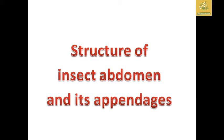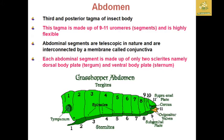In this video we are going to see about fundamentals of entomology — specifically the structure of the insect abdomen and its appendages. The abdomen is the third tagma, or posterior tagma, of the insect body. The tagma is mainly made up of nine uromeres, which are segments that are highly flexible in nature. The abdominal segments are telescopic and are interconnected by a membrane called the conjunctiva.